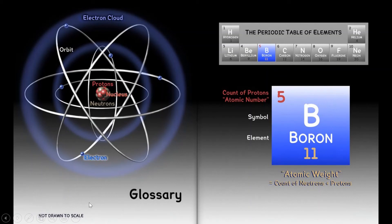Boron, not drawn to scale. Electron cloud, orbit. There's the electron. Proton. So let's see here, the count of protons, which is the atomic number, is five. The protons are in here with the nucleus and the neutrons. Eleven is the atomic weight, which is the count of the neutrons and the protons. The symbol is B, the element is boron.